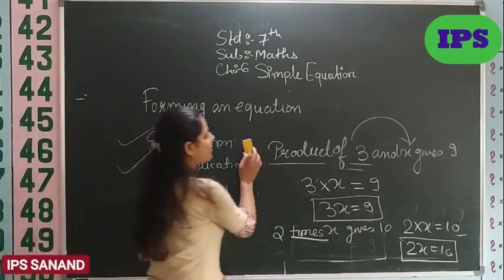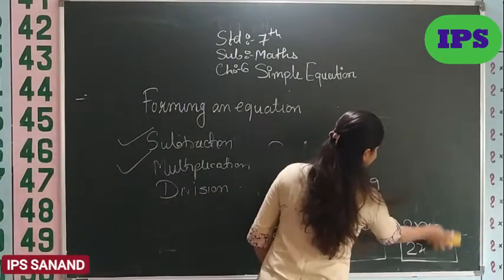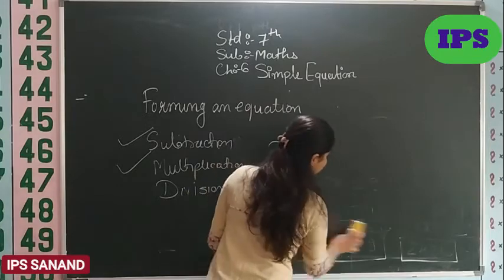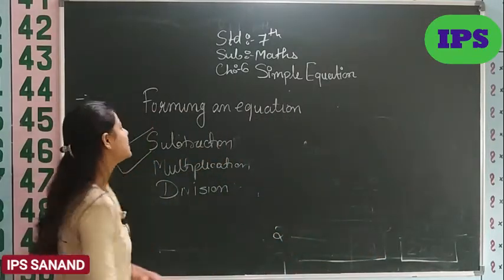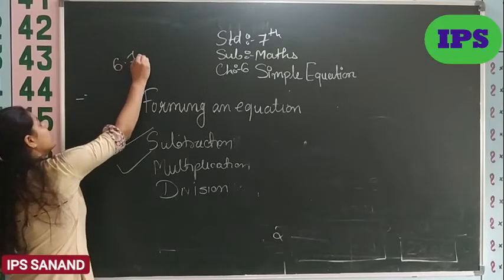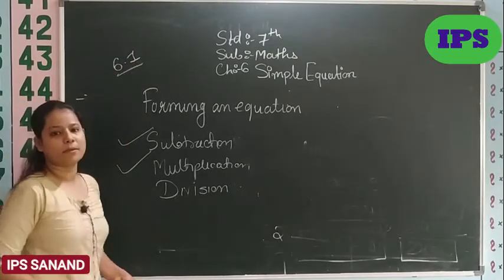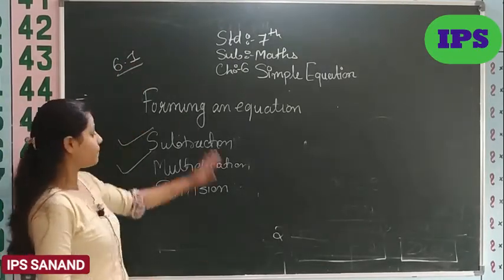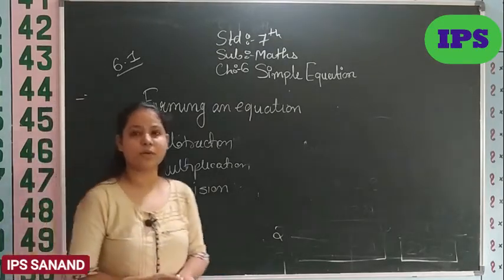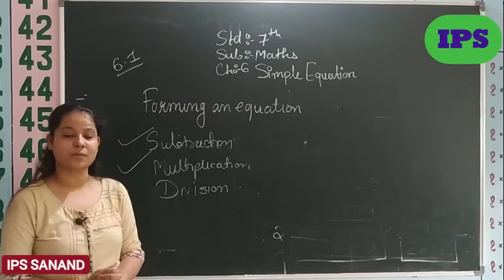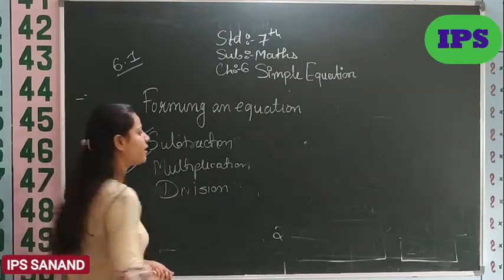If multiplication statement is there, what will multiplication statements be like? Product of 3 and x gives 9. Here you have written multiplication, and here you are writing product, ma'am? So, you can also call multiplication as product. So, how will we write this? Product means multiply. 3 multiply by x will give me 9. I told you in sixth standard also.